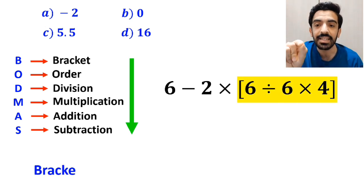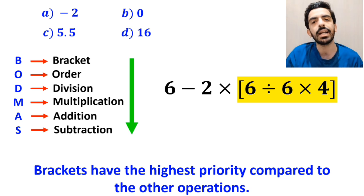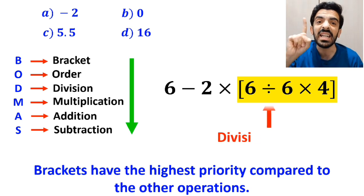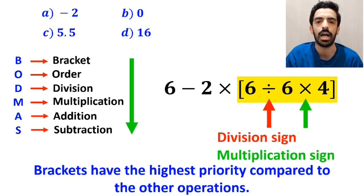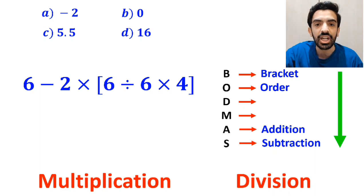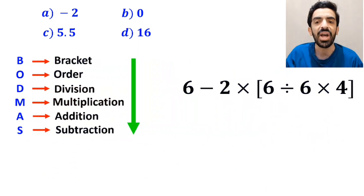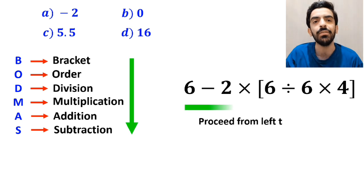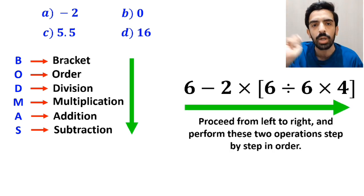We must carry out all operations exactly in order from top to bottom. First, we start with the expression inside the brackets because brackets have the highest priority. As you can see in the image, inside the brackets we have a division sign followed by a multiplication sign. According to the BODMAS rule, multiplication and division have the same level of priority, so we proceed from left to right.